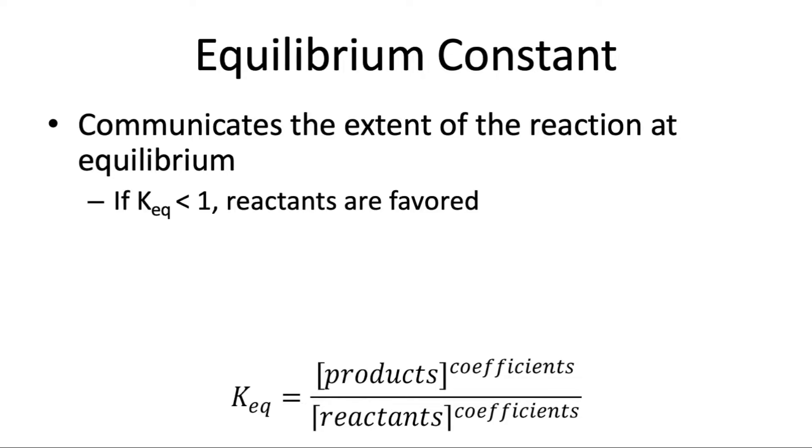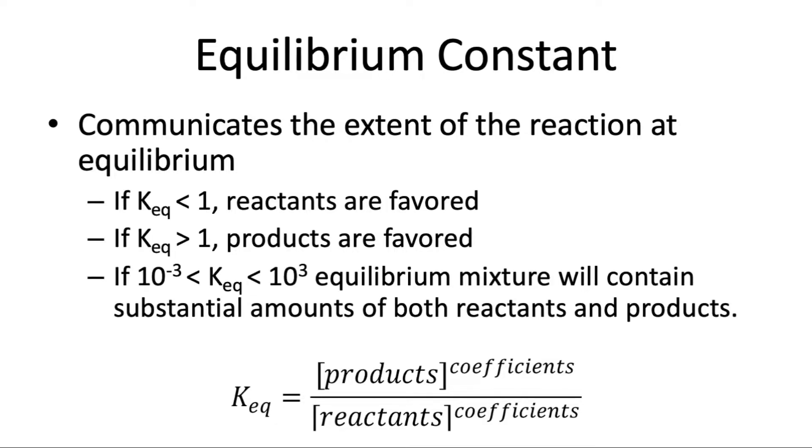If K is small, less than 1, then we say the reactants are favored. If it's greater than 1 we say the products are favored and if it's somewhere in the middle then usually it contains a decent mixture of both reactants and products. And the reaction system that you're going to look at today with iron and thiocyanate ions is in this category where the equilibrium constant is kind of in the middle and so you'll be able to see visually with your eyes how the concentrations change when the equilibrium shifts.